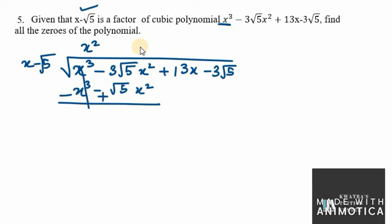Changing signs, we get minus 3√5 plus √5, which equals minus 2√5 x², plus 13x minus 3√5 remaining. Now we need to work with the minus 2√5 x² term.